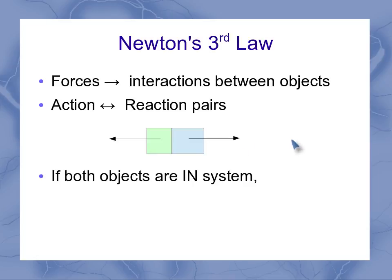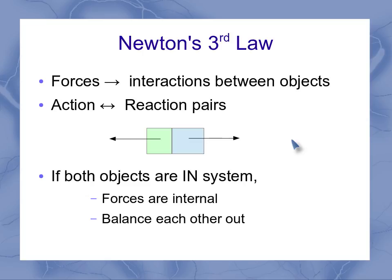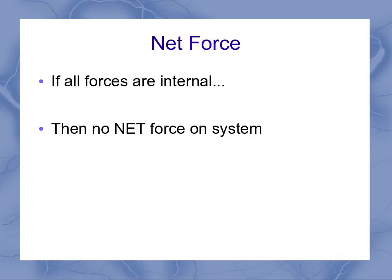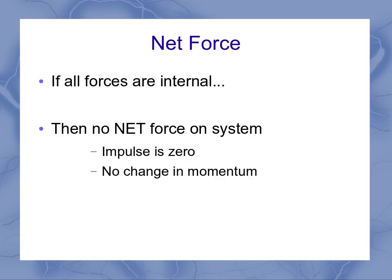If both of the objects are in our system, that means the forces are internal and they balance each other out. So what does that mean for the net force? If all the forces are internal, then there's no net force on the system, because the internal forces always balance each other out by Newton's third law. That means the impulse is zero — if I have no net force, I can't have an impulse — and that means there's no change in momentum. Now, this is of the system. Each individual object in the system might have its momentum change, but the momentum of the system doesn't change.